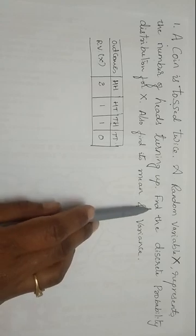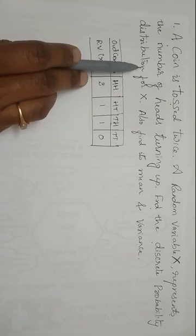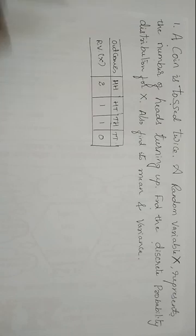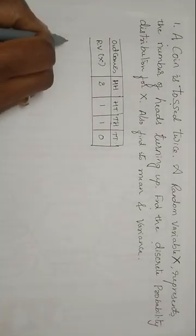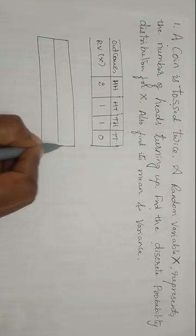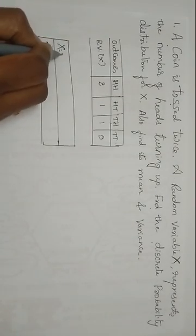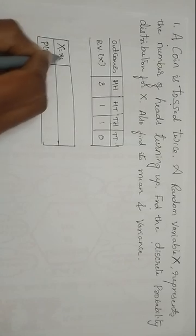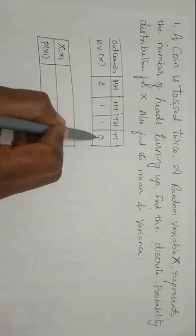Now, what we have to find? Find the discrete probability distribution. Probability distribution. It is nothing but the table which contains the different values of X that is Xi with its probabilities. So let me write one more box which shows the probability distribution function P of Xi and X is equal to Xi values.